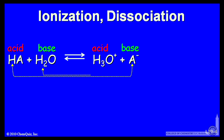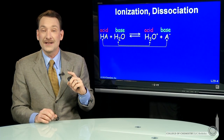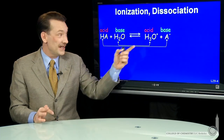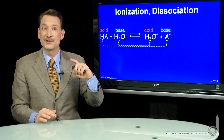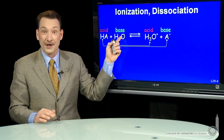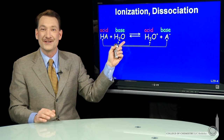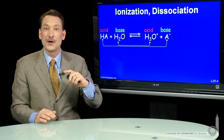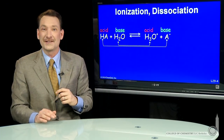Let's look at that. Here's an acid reacting with water to form H3O plus and the conjugate base, A minus. So an acid will form H3O plus in solution. In fact, one way you could test if you have an acid is measure the concentration of H3O plus, because acids will protonate water — donate their protons to water to form H3O plus. So the presence of H3O plus is indicative of an acid solution.